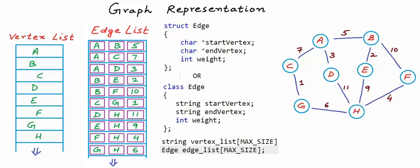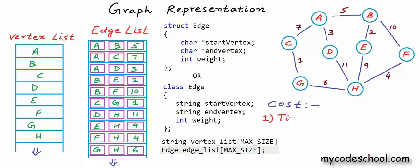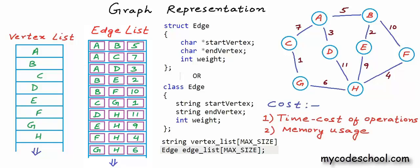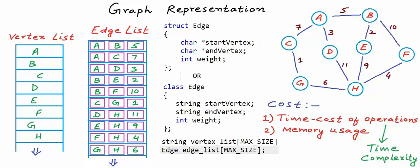For any possible way of storing and organizing data, we must also see its cost. When we say cost, we mean two things: the time cost of various operations and the memory usage. We measure the rate of growth of time taken with the size of input — what we call time complexity — and the rate of growth of memory consumed, what we call space complexity. Time and space complexities are most commonly expressed in terms of big O notation. I'm assuming you already know about time and space complexity analysis and big O notation.